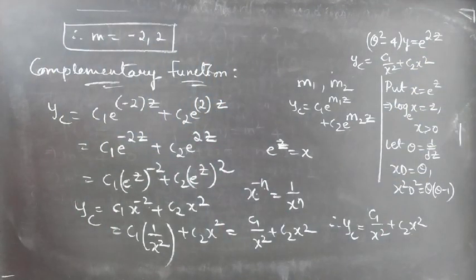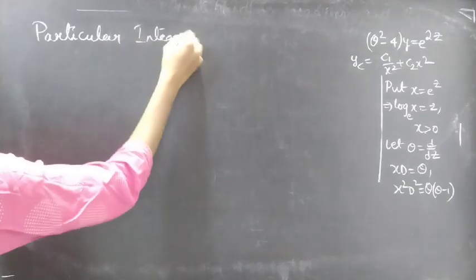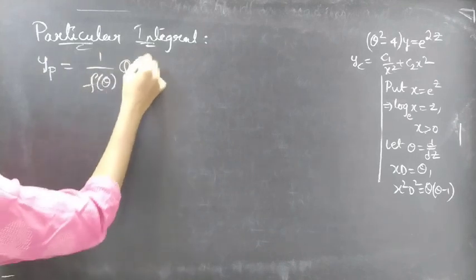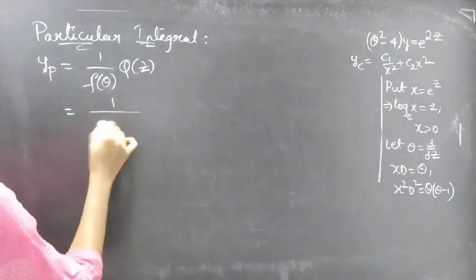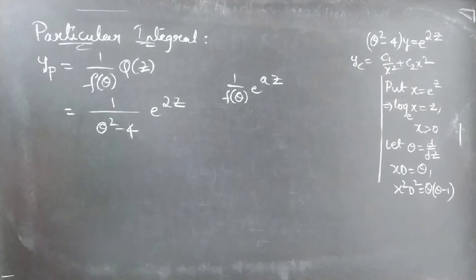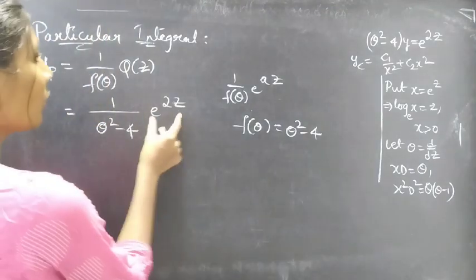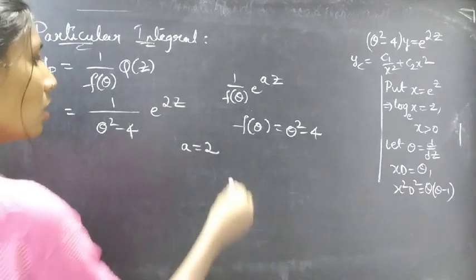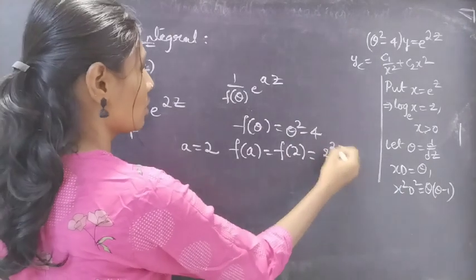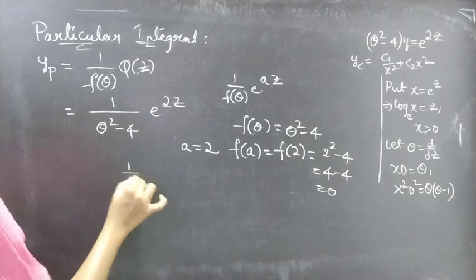Now let's find the particular integral yp. We use 1 by f of theta into Q of z, where f of theta equals theta squared minus 4 and Q of z equals e to the power 2z. Comparing e to the power 2z with e to the power az, we get a equals 2. Finding f of 2: replacing theta by 2 gives 2 squared minus 4 equals 4 minus 4 equals 0. Since f of 2 equals 0, replacing theta by 2 gives 1 by 0, which is undefined.